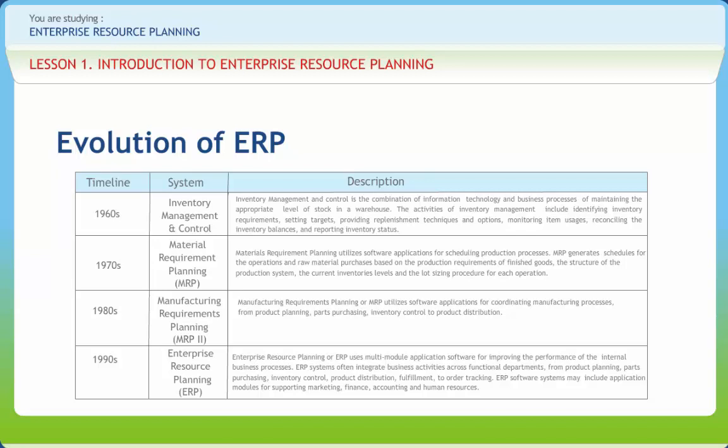MRP2 involved business activities like purchase orders, inventory, personal planning, processing, distribution planning, etc. ERP is software which is designed to model and automate all basic processes and functions of an enterprise, from finance to shop floor, integrating information across the company and eliminating complex computer systems.